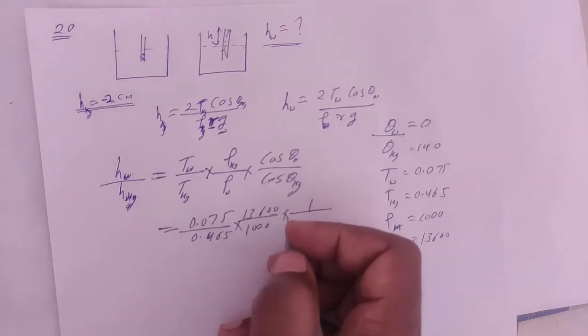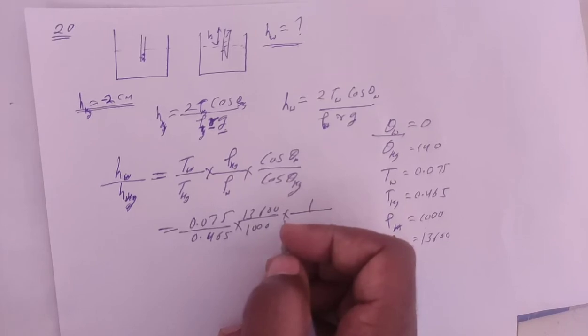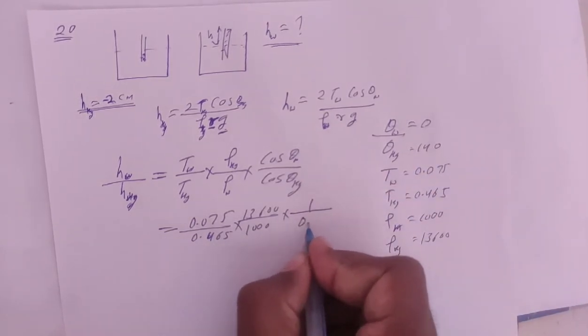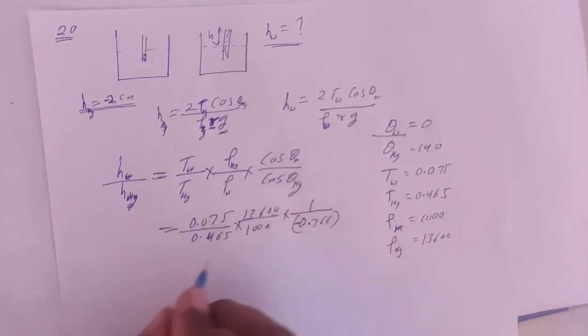cos 140 equals cos(90 plus 50), which becomes negative sin 50, which is negative 0.766.